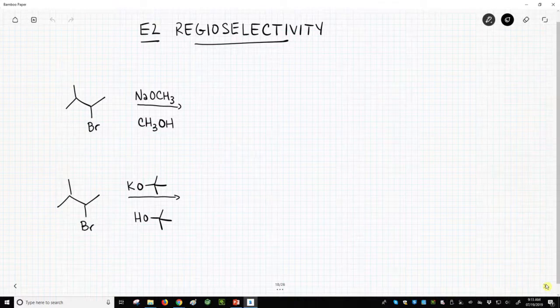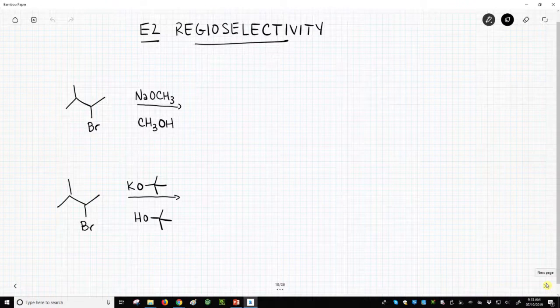In organic chemistry, I think there are two important words that begin with R, and one is resonance, and we'll see that a lot in this course, and another is regioselectivity, and that's what we're going to introduce now.